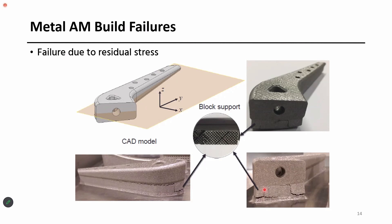Once you figure out what are the right process parameters and right orientation, you can avoid these kinds of failures. If you use the right printing parameters and everything properly, you don't see these problems. What can go wrong — that is what I'm explaining — these are the different things that can go wrong if you don't design a part properly or don't use the right printing parameters.